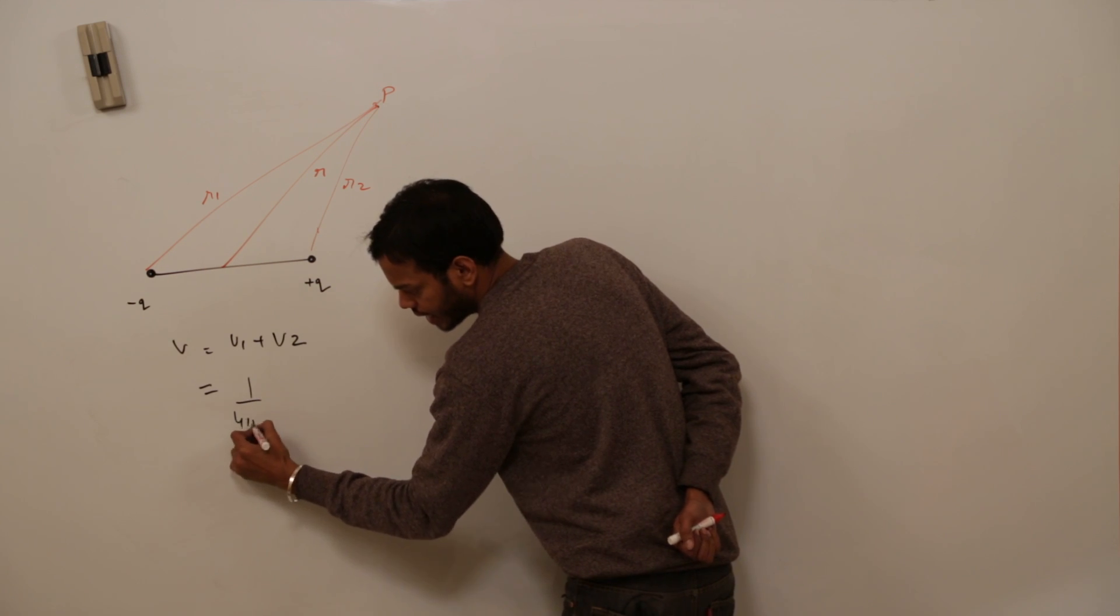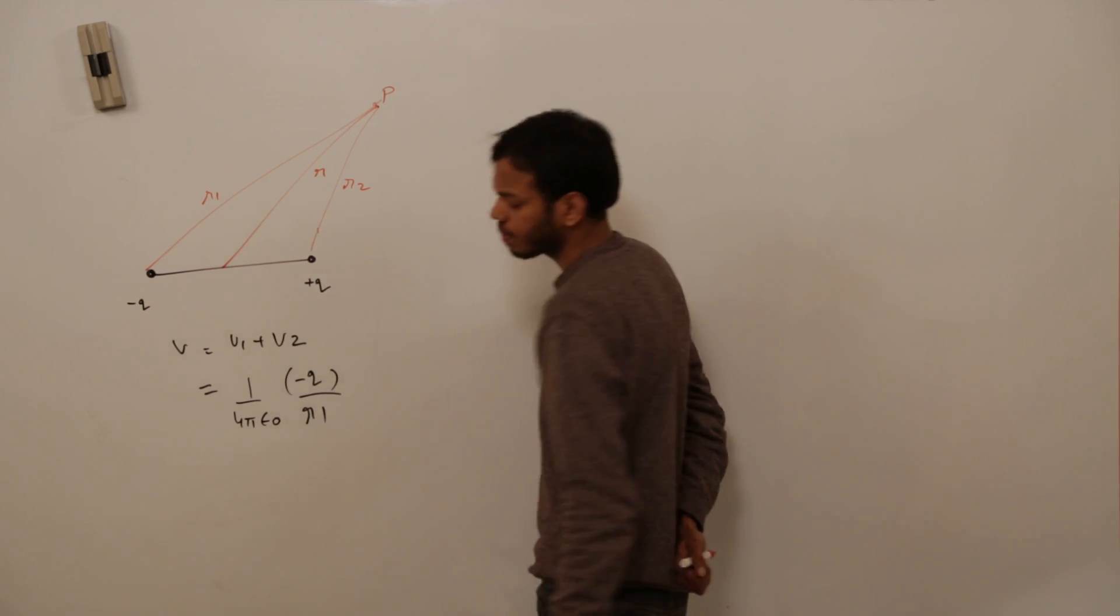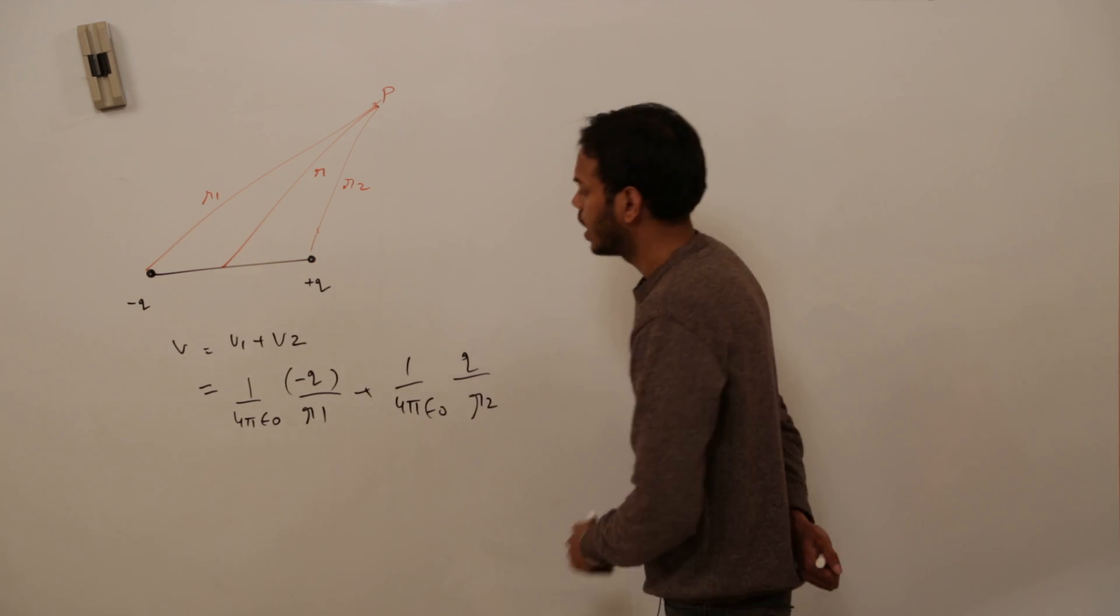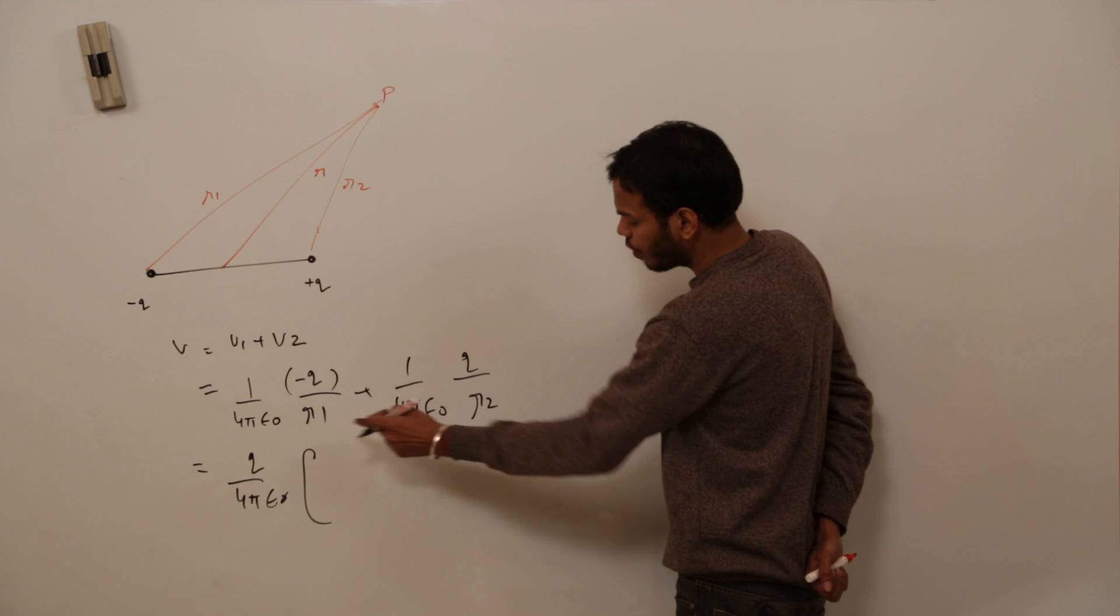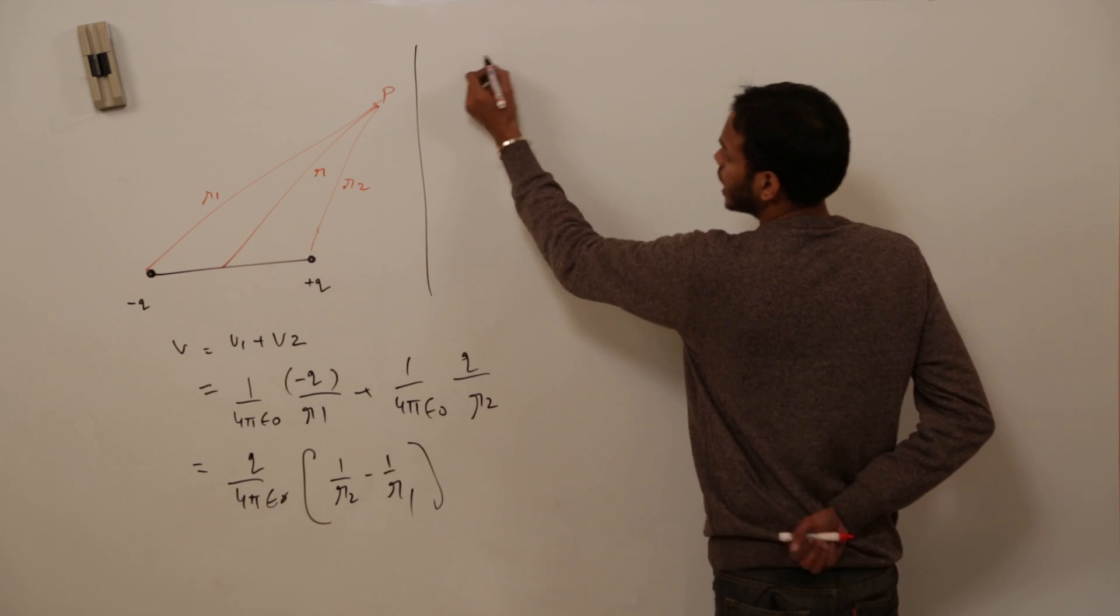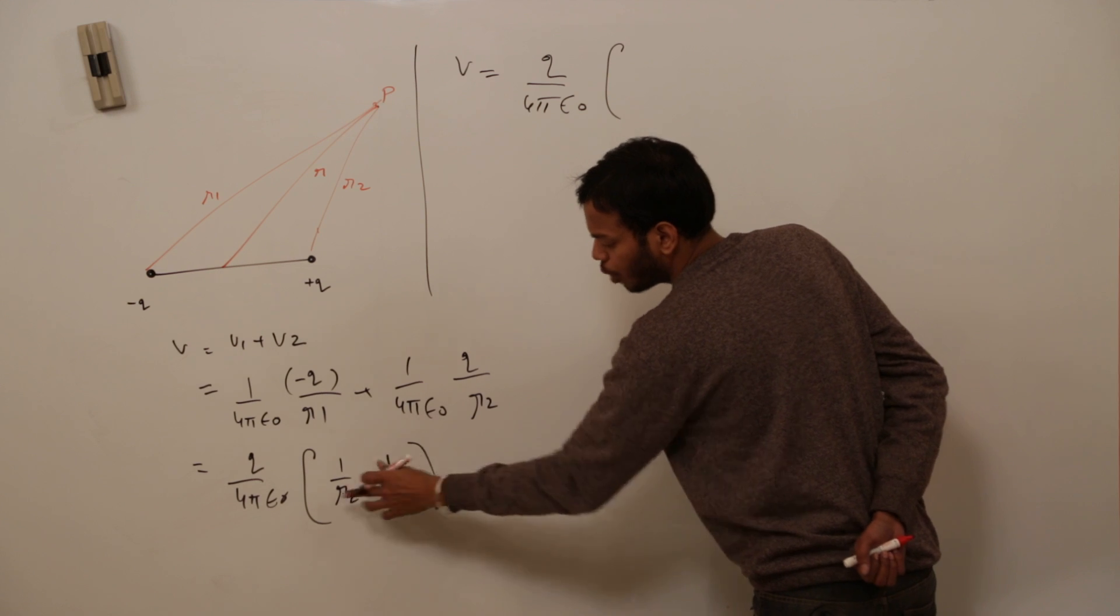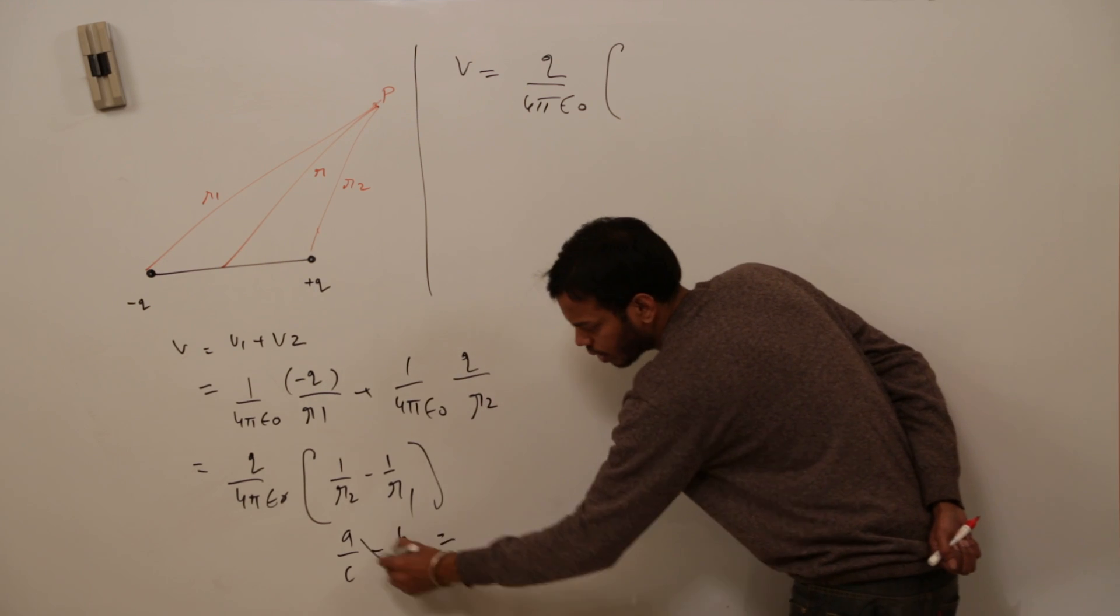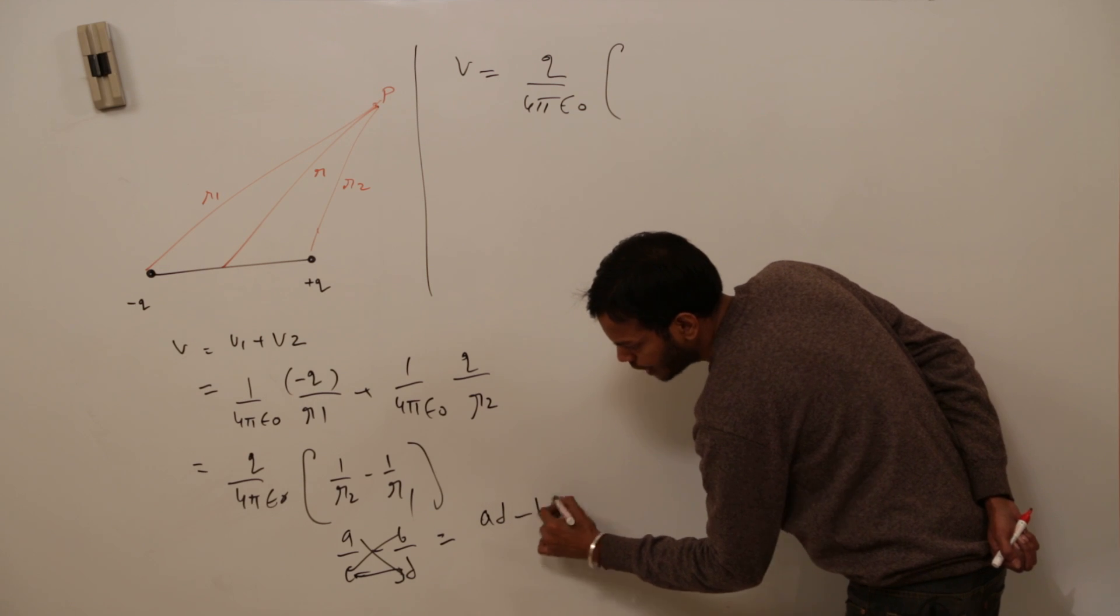K then Q1 upon R1 plus K Q2 upon R2. Take all these common things out. Q upon 4 pi epsilon goes out. You are left with minus 1 upon R2. That means 1 upon R2 minus 1 upon R1. This gives you what net potential is Q upon 4 pi epsilon naught. How would you solve it? R1 minus R2 upon R1 into R2.